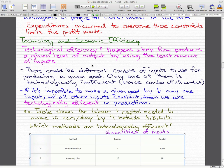Technological efficiency occurs when a firm produces a given level of output by using the least amount of inputs. There may be different combinations of inputs to use for producing a given good, but only one of them is technologically inefficient. And when we say technologically inefficient, it means that they're the worst combo of all the combos.